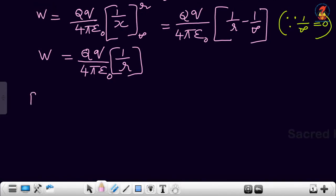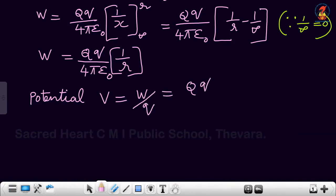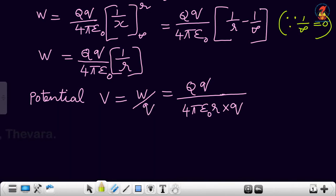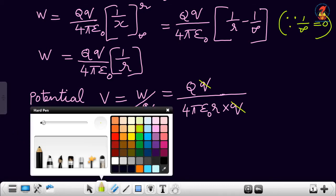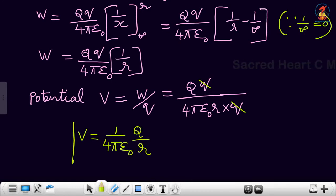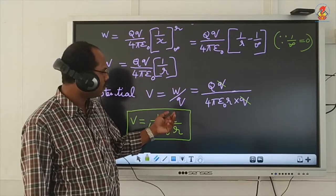Now, electric potential V = W/Q. So V = [Qq/(4πε₀R)] / q. Small q cancels, and the final answer is V = (1/4πε₀) × Q/R. So V = (1/4πε₀) × Q/R.